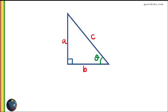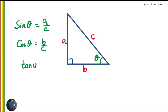Sin theta is opposite side over hypotenuse, cos theta is adjacent side over hypotenuse, and tan theta is opposite side over adjacent side. Therefore sin theta equals A over C, cos theta equals B over C, and tan theta equals A over B.